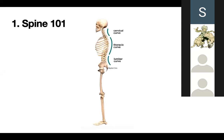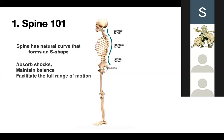Our spine basically looks something like this. It is not straight — it has a very good S-shaped curve, a slight curve. The topmost part of the spine is called the cervical. The central part, which is the chest cavity covering your lungs, is called the thoracic spine, and the lower part is called the lumbar spine.